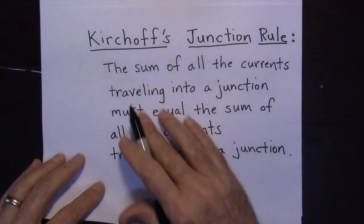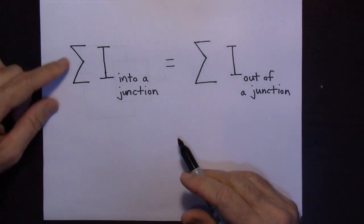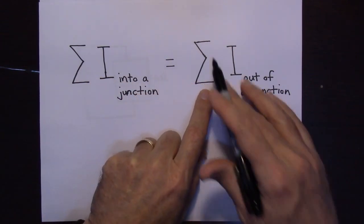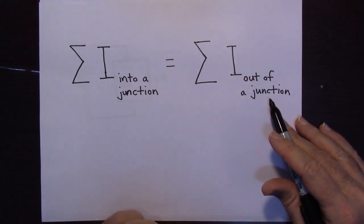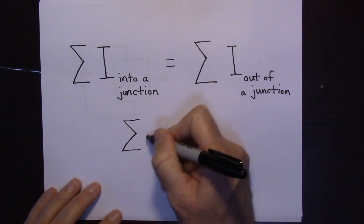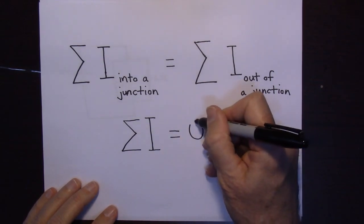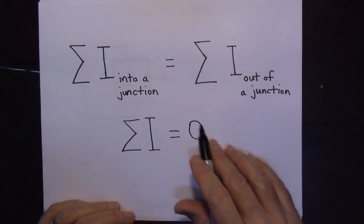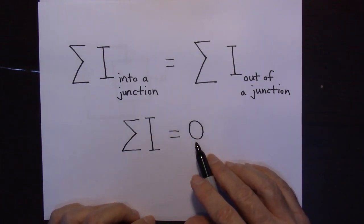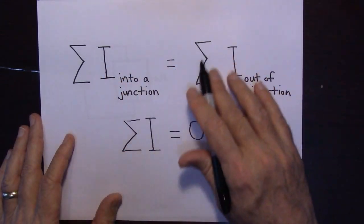That was a wordy way of saying it. Here's a more mathematical way: these sigmas mean 'the sum of,' so the sum of all currents into a junction equals the sum of all currents out of a junction. Sometimes it's written as the sum of all currents into a junction adding up to zero. If you go that route, you count currents going in as positive and currents coming out as negative, and the algebraic sum will always add up to zero. Either way, it's just saying the currents going in have to equal the currents coming out.